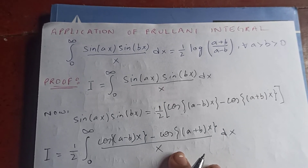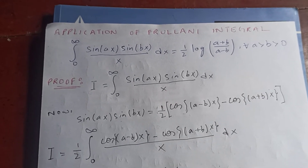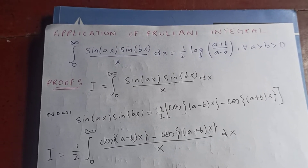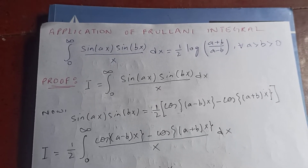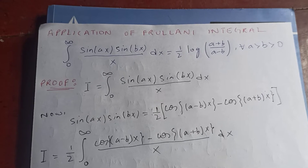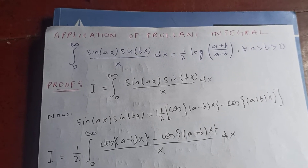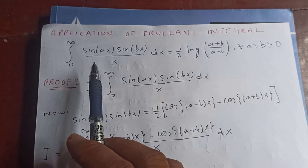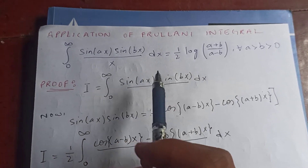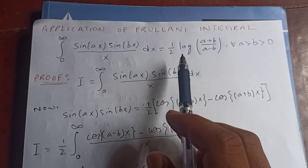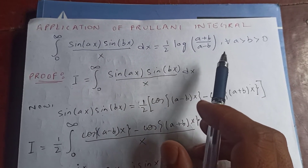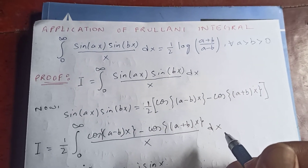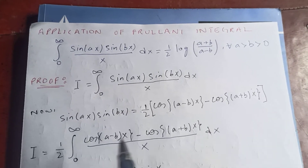Hello guys, thanks for watching my video today. Let's see another application of the Frullani integral. Thank you so much for your support. Today we'd like to solve this integral: the integral from zero to infinity of sin(ax)·sin(bx) over x dx, which equals half of log of (a+b)/(a-b), where a is greater than b and greater than zero.